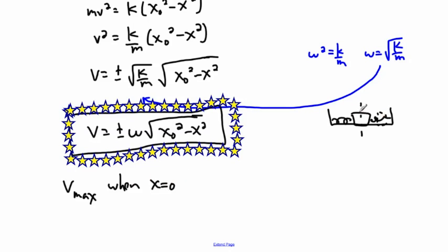Because when it's at displacement equals zero, it's when it's right here at the equilibrium point, and that's where it's going the fastest. So because of that, just set x equal to zero. That means you have v equals plus or minus omega times square root of x zero squared, because this here became a zero. And then the square root of something squared is just x zero.